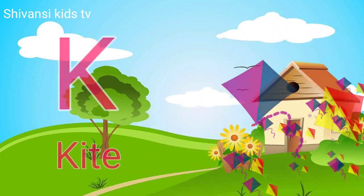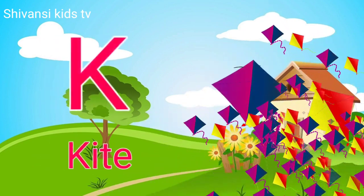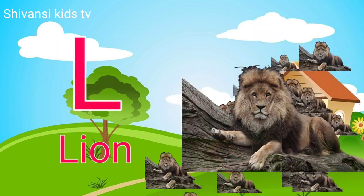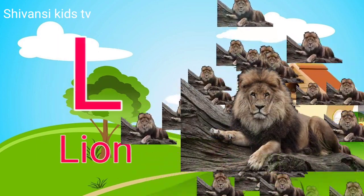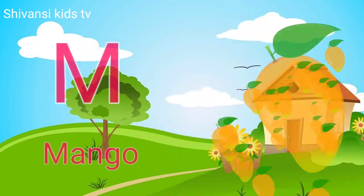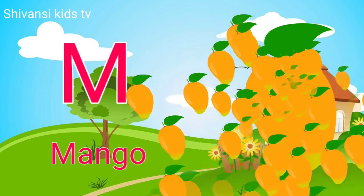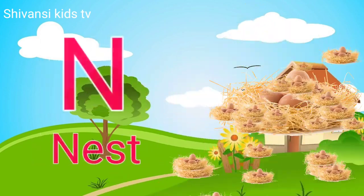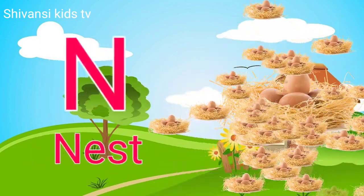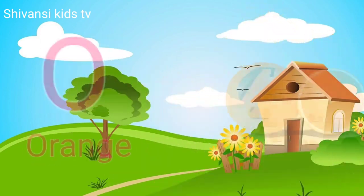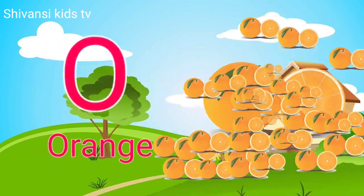K for kite, L for lion, M for mango, N for nest, O for orange.